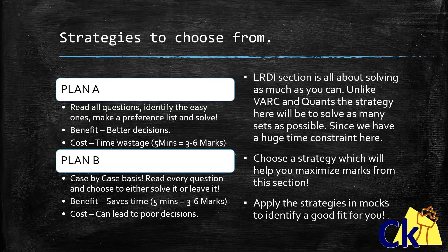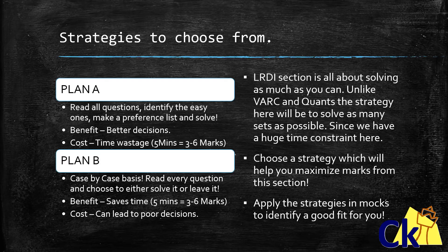In LRDI there are two strategies, and the choice of strategy — unlike in VARC — plays a very important role. The first strategy is: you get the paper, you read all the sets, write them down, identify the sets you will and won't do, clear out the ones you won't do, and make a list of preference — first, second, third, fourth. If there is a set with one question you won't solve, do those sets at the end. The benefit of this plan is better decisions, but it will waste time because you have to re-read the sets again — around five to six minutes.